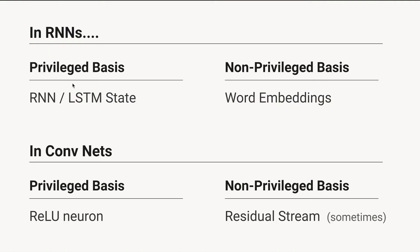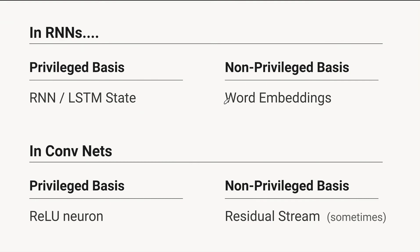It's worth talking about this in the context of other types of neural networks. In RNNs, your RNN state and LSTM state is generally privileged — you probably have some kind of nonlinear activation function, whether you have an RNN, LSTM, GRU, or any of these things, you probably have a privileged basis. But your word embedding is basically the canonical example of not having a privileged basis.